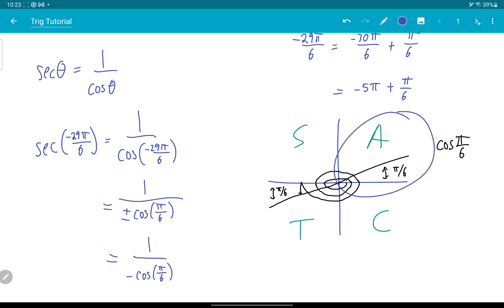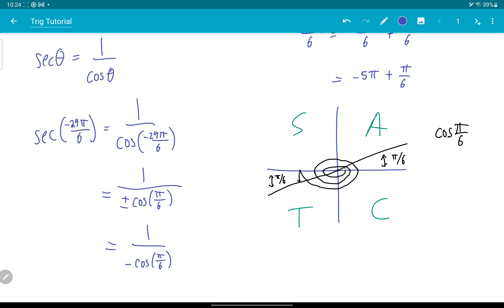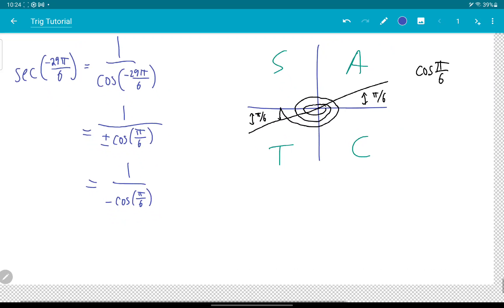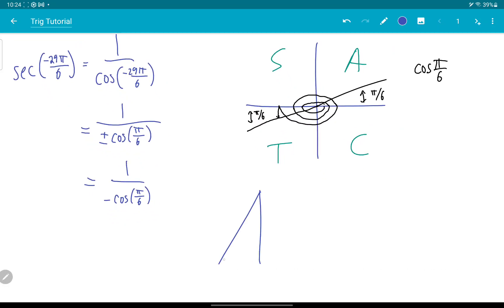Now cosine π over 6, being in the first quadrant, it's going to be positive, and I can find it by this triangle: 1, root 3, rather 2. My π over 6 up here, cosine is adjacent over hypotenuse. So I get negative root 3 over 2, which gives me my answer.